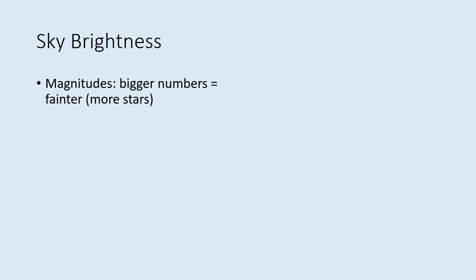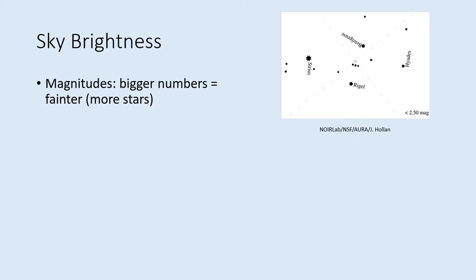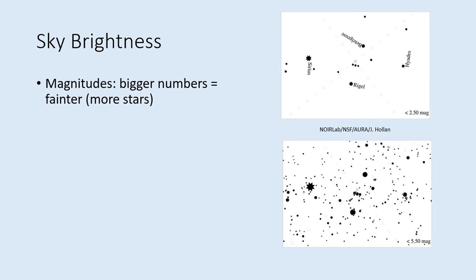Select one of the constellations you found from Table 1 and compare what you are seeing in the sky with the magnitude charts for that constellation. Note that magnitudes are defined so that bigger numbers mean fainter stars. So the magnitude 2 chart shows you stars that are as bright or brighter than magnitude 2, while the magnitude 5 chart shows stars that are 5th magnitude or brighter — hence, there are many more stars on this chart. If the sky is very bright, you may only be able to see down to 2nd magnitude stars, while if you have a dark sky, you may see stars all the way down to magnitudes 5 or 6. This gives a measure of how bright the sky is where you are observing.